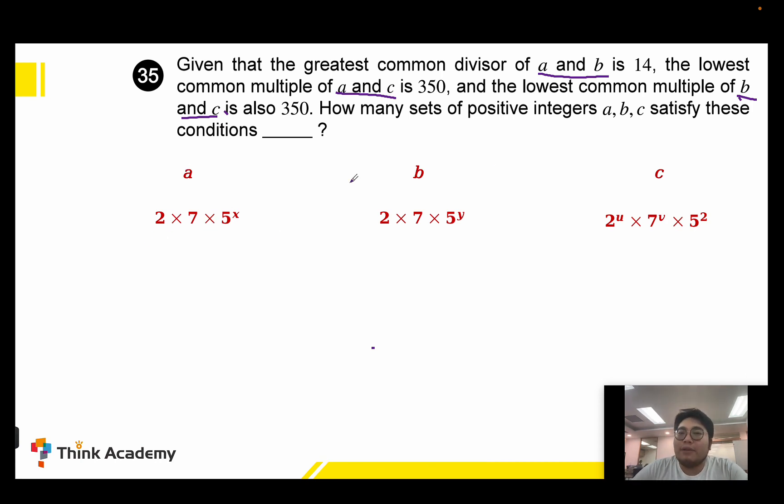You may ask why this form. Because A and B's GCD is 14, we need to keep A and B both have 2×7, since 2×7 equals 14. Also for C, we know the LCM should be 350, so to keep the LCM as 350, we need to use 2^U×7^V×5^2.